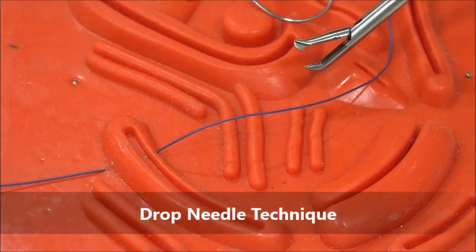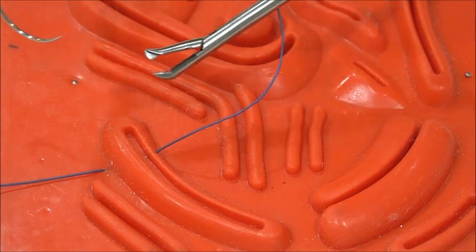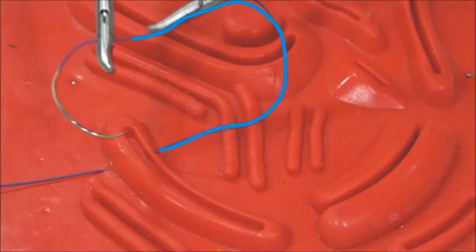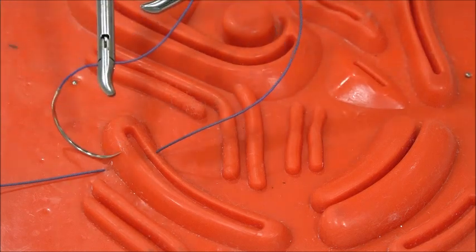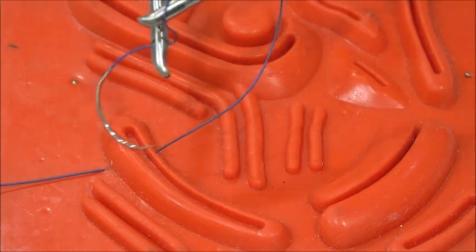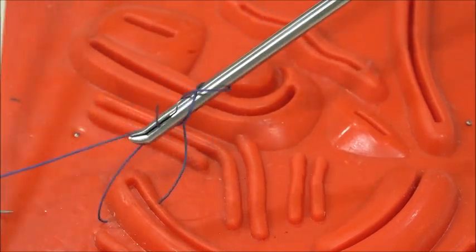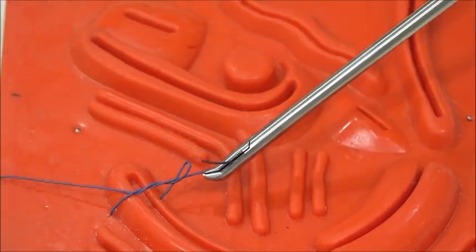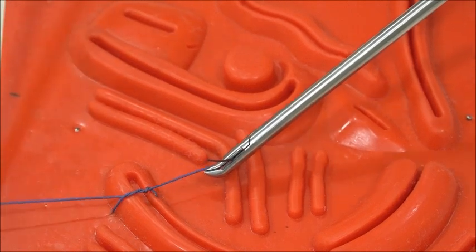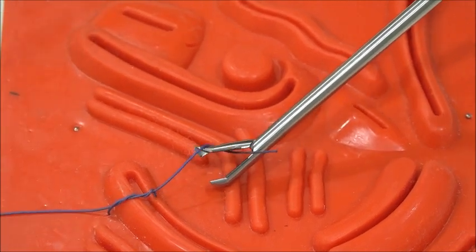Knot tying: there are two techniques of knot tying—drop needle technique and hold needle technique. In drop needle technique, hold with the right grasper 2 cm distal to the base. The left instrument is constant. Two wraps are taken, and the left instrument holds the tail. You should not pull the tail, and the two threads are tied parallel to the tissue.